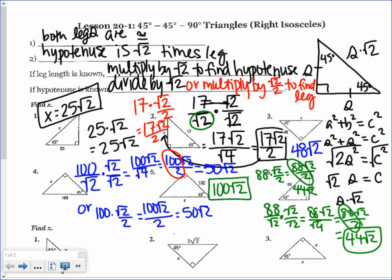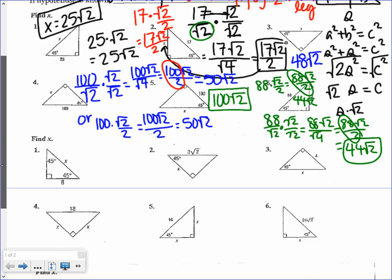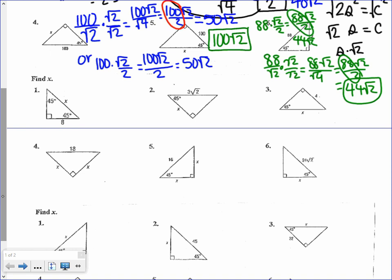Pause the video and try the next 1 through 6, then check your work. For number 1, take your leg and multiply by √2 to get 8√2 as your hypotenuse. On number 2 it's a little different — you have a radical in the hypotenuse, but the same idea applies. Dividing by √2, you get √2 over √2 which cancels, leaving x equals 3.